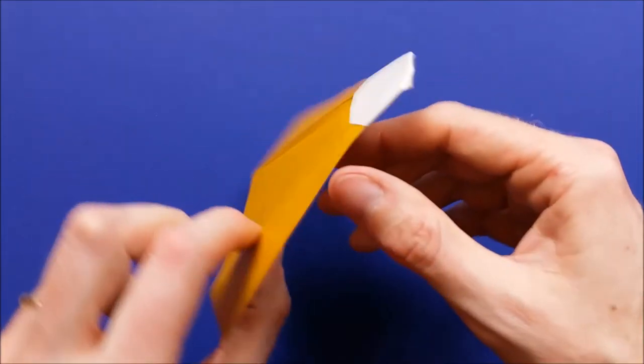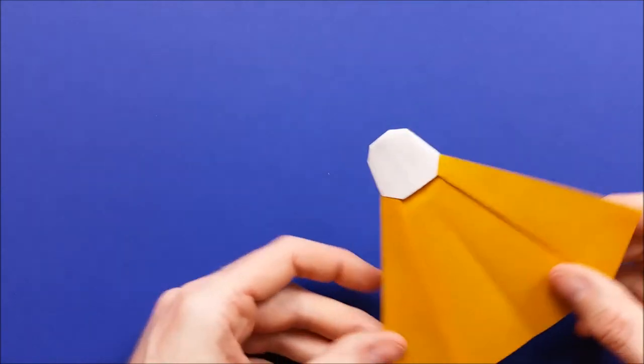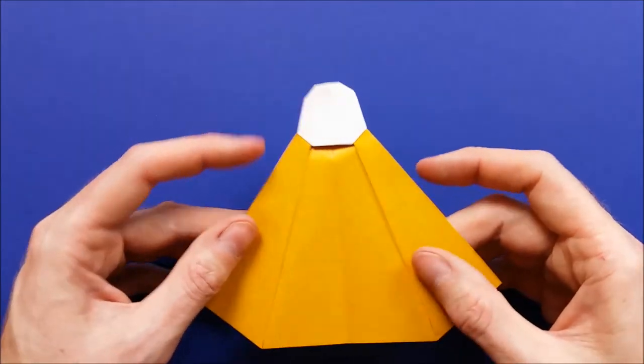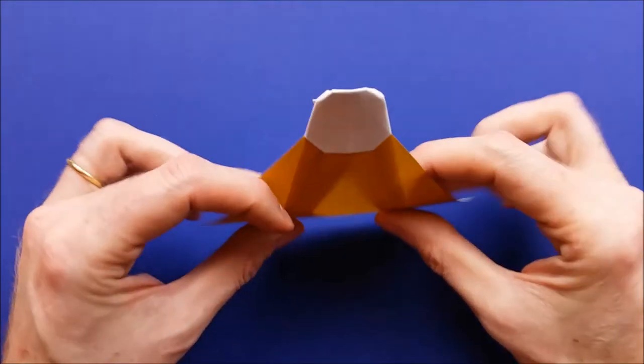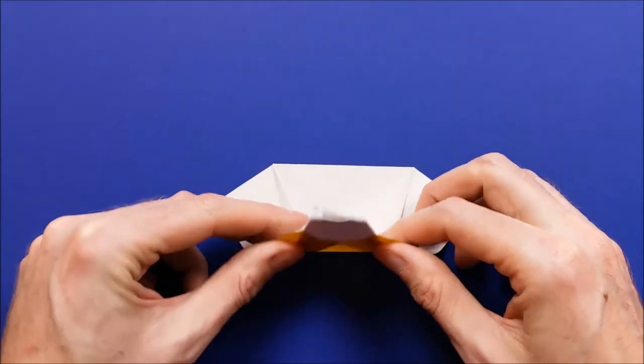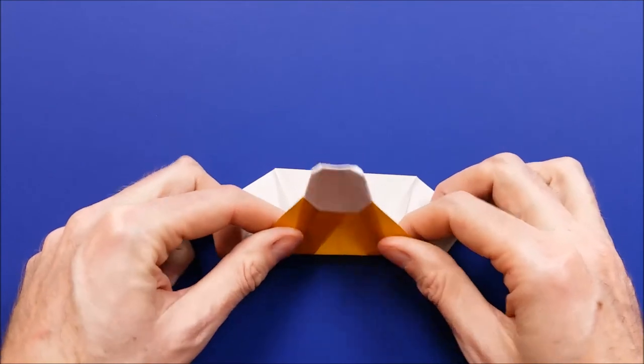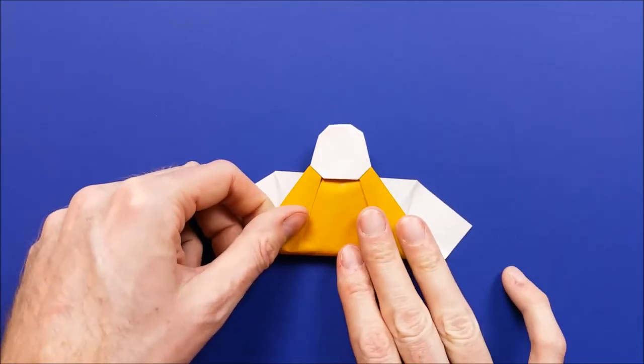When you turn the model to the other side you get the badminton shuttlecock. Now we're going to turn it into a Buddha. To do this, we'll just make a mountain fold here. There isn't any precise location for this fold.